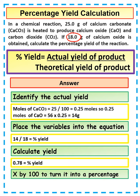So our yield is going to be 0.78. Then, remember to get it into a percentage, we just need to times that 0.78 by 100, which would give us 78%.